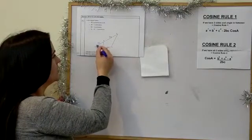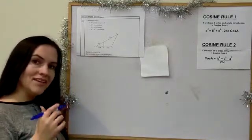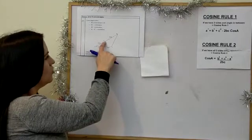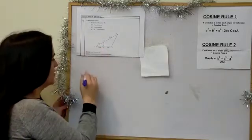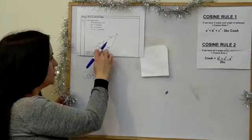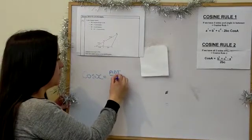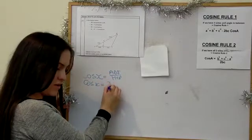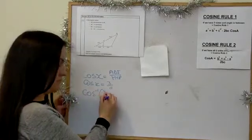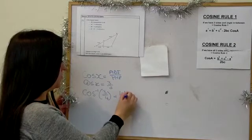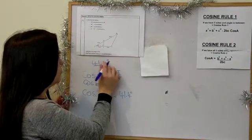The key is to first find the angle using the right-angled triangle. Calling that angle x, cos x = adjacent / hypotenuse = 3/4. Then cos⁻¹(3/4) gives us 41.4 degrees. So the angle inside the triangle is 41.4 degrees, which we can then use to proceed with the cosine rule.